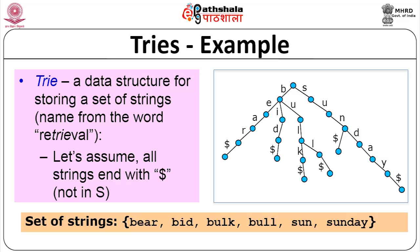Bear, bid, bulk, and bull all start with B; sun and sunday both start with S. So the root has two children: B and S. After B, the next letters are E, I, and U — in alphabetic order. After S, you have only U, and after SU, both 'sun' and 'sunday' share S-U-N. After N, a special dollar '$' character indicates that 'sun' is a word by itself. After that come B, A, Y, and dollar — completing 'sunday'.